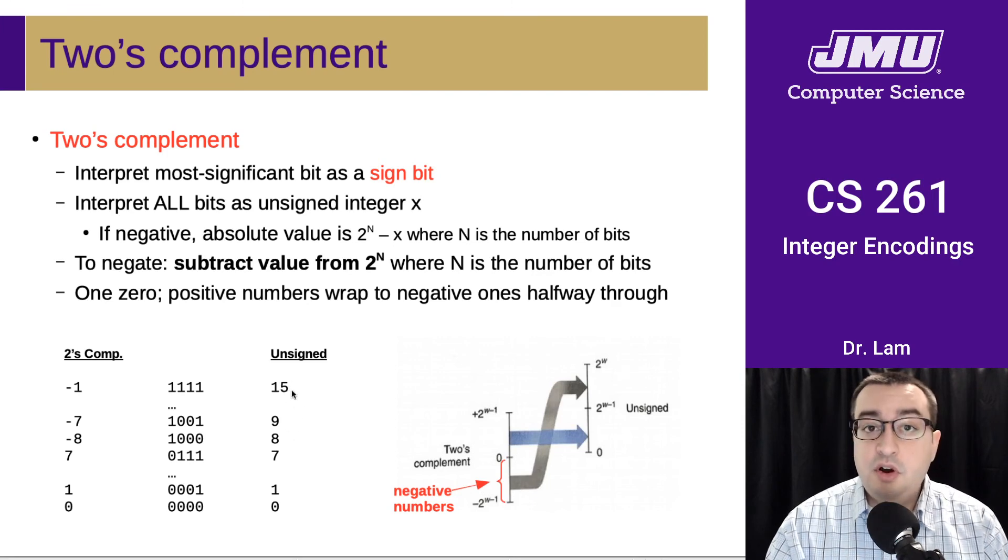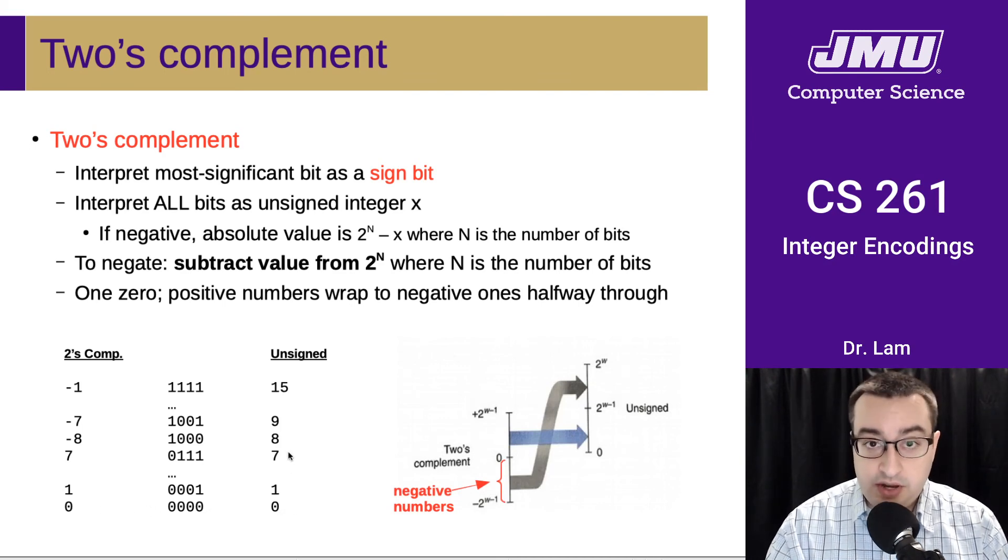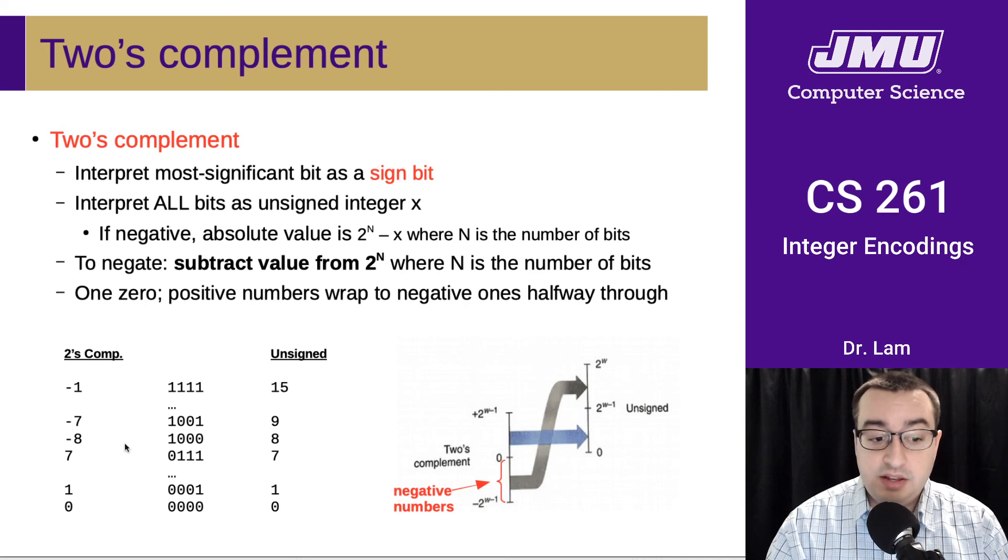And so you have these large unsigned positive values that are now allocated to store the negative integers. And so as you start from unsigned values, you have positive values that are the same as their unsigned values. And then at some point you switch over to a very negative number and kind of reset at the bottom of the number space. And then you kind of work yourself back up to negative 1.